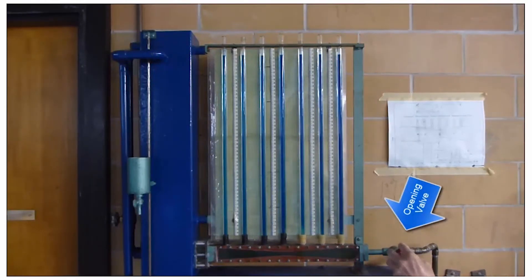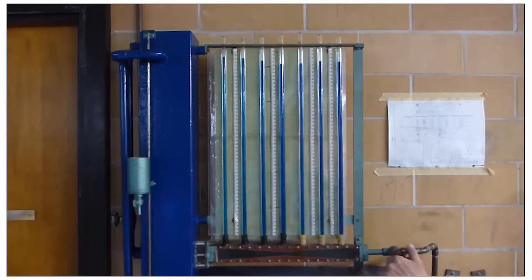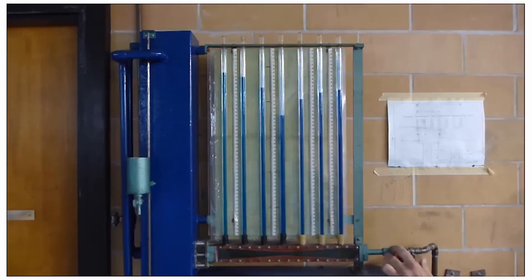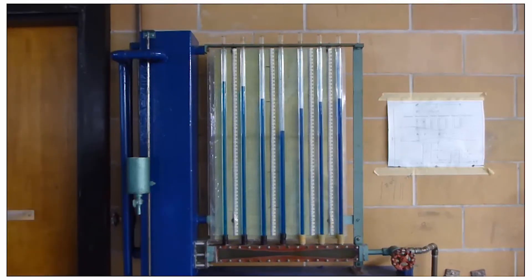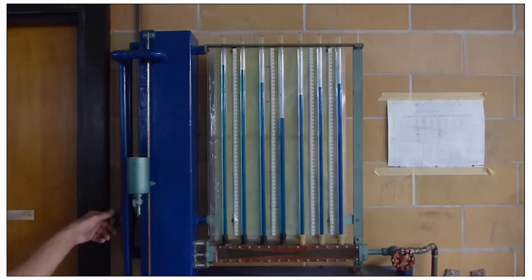At the beginning here, I'm just opening that valve to let some flow through, and you'll notice the piezometer levels changing dramatically. Now you can see it's pretty much at steady state, so you're seeing the steady state hydraulic grade line.